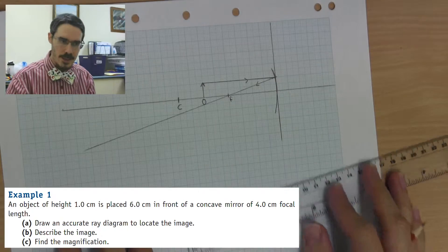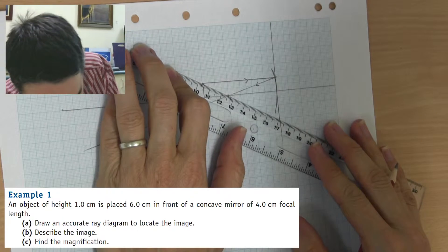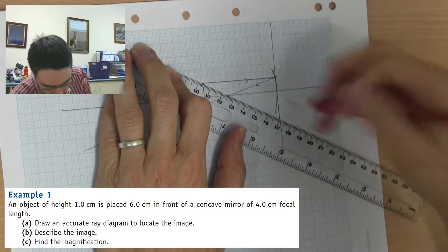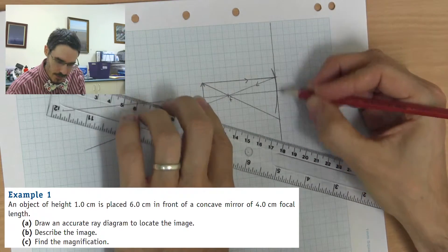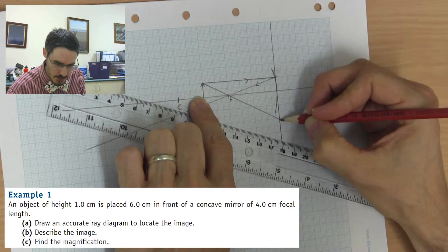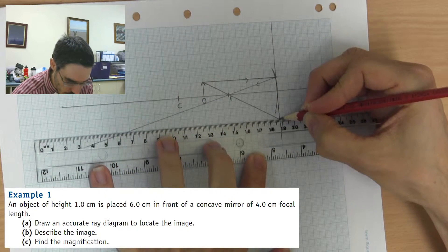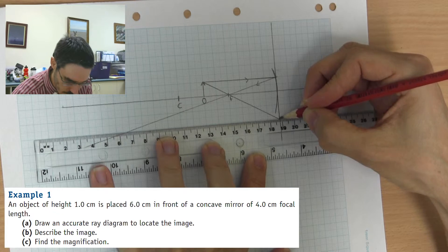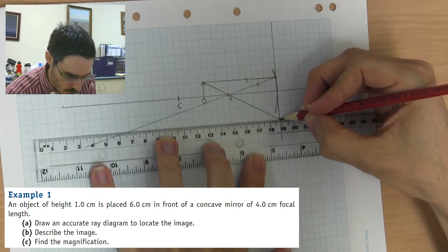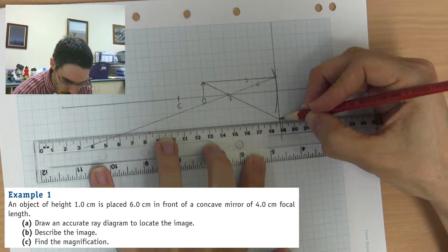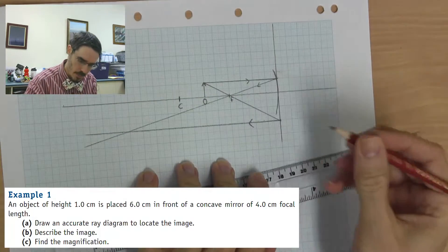The second ray heads towards the focus, through the focus there. And again, rather than try to worry about the exact curvature of that line, I'm just going to reflect it from this line up here. And it's going to go back over there.